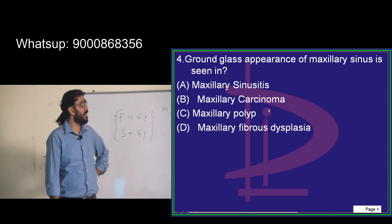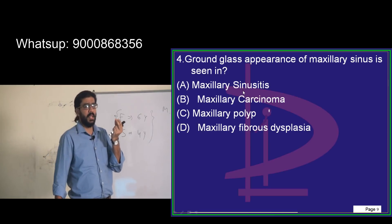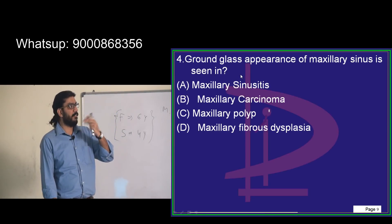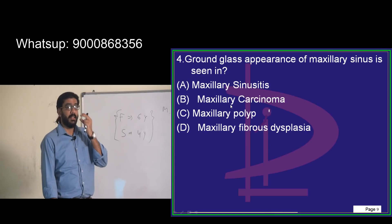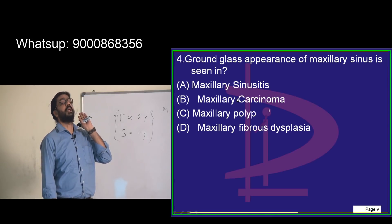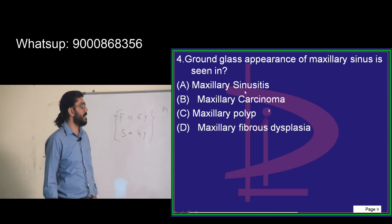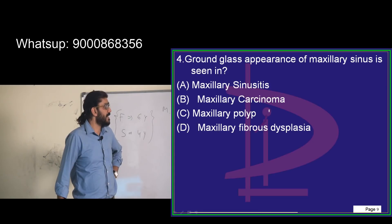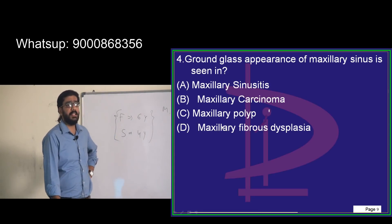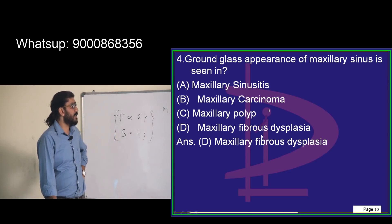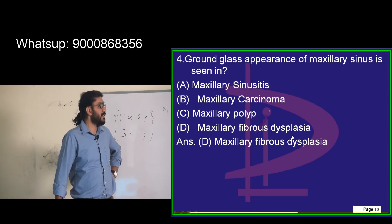Ground glass appearance is related to a tumor. In maxillary sinusitis, you see opacification on CT or X-ray with an air-fluid level in acute cases, which can shift when the patient bends. Maxillary carcinoma appears as a growth within the maxilla extending medially. A maxillary polyp shows haziness on CT. The answer for ground glass appearance is maxillary fibrous dysplasia.